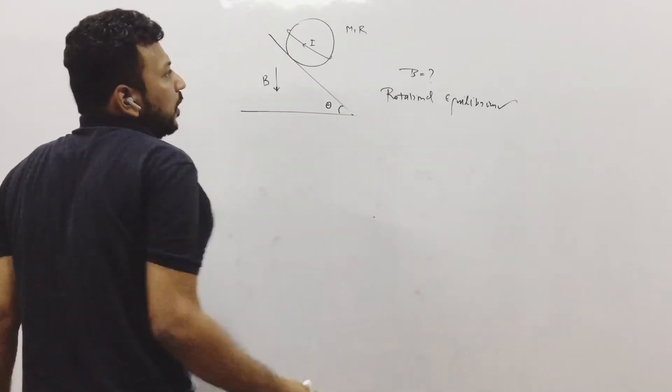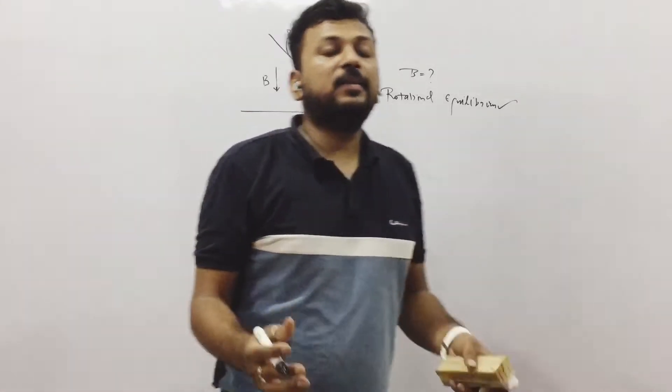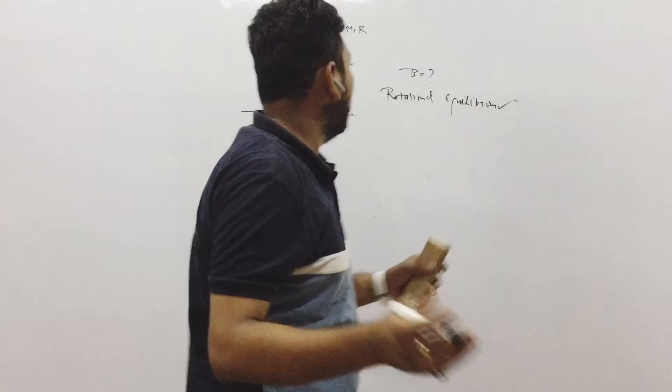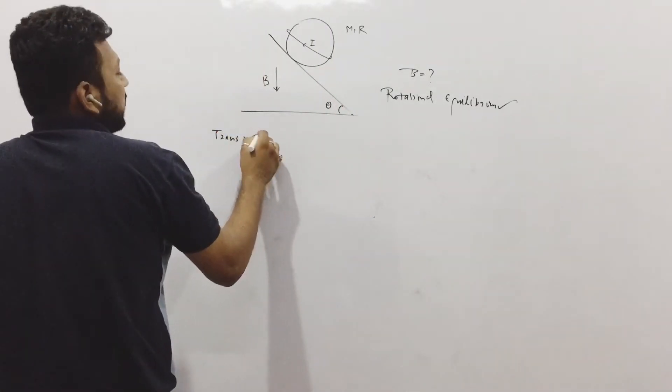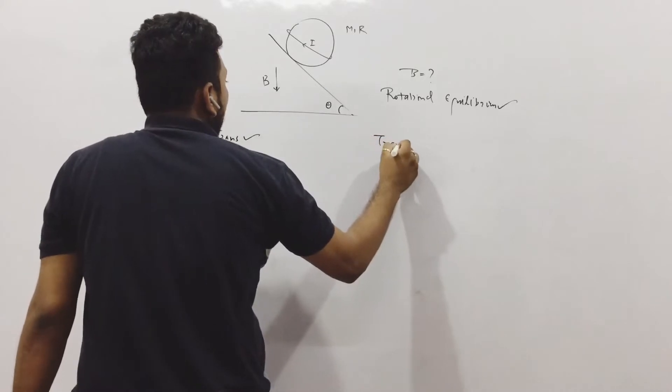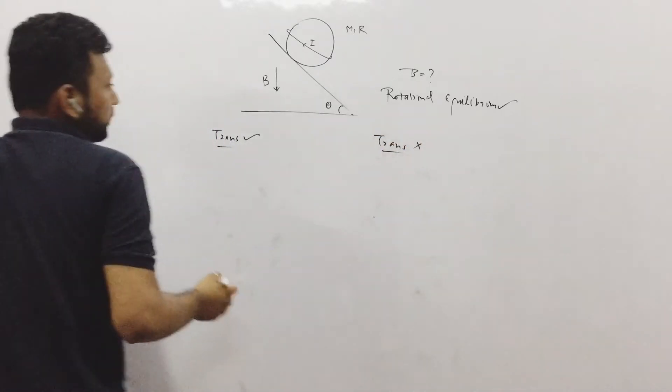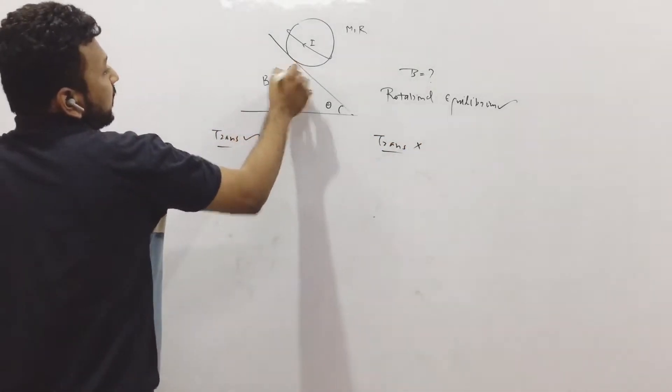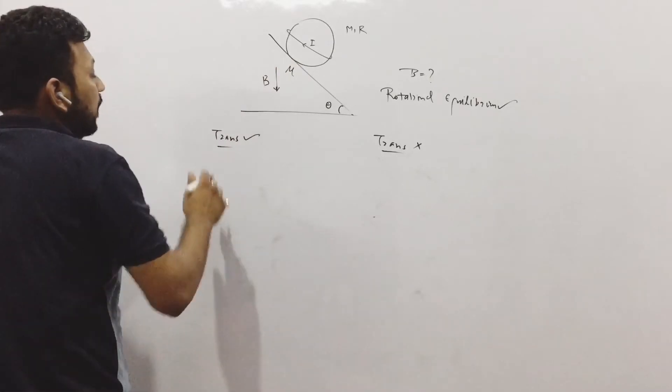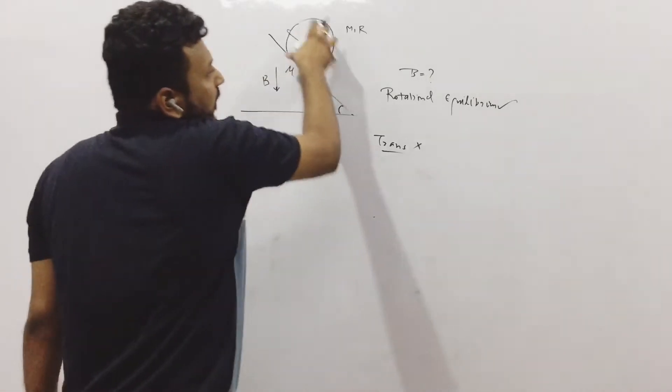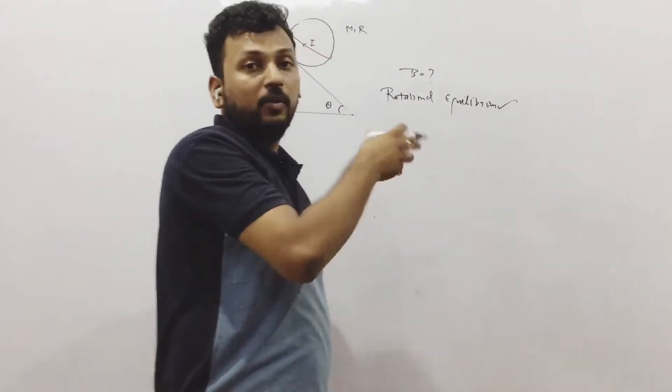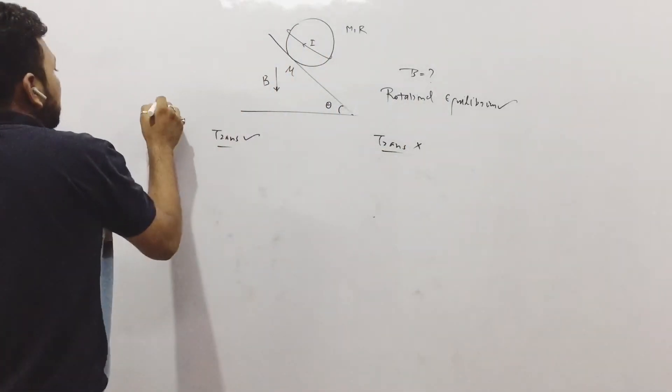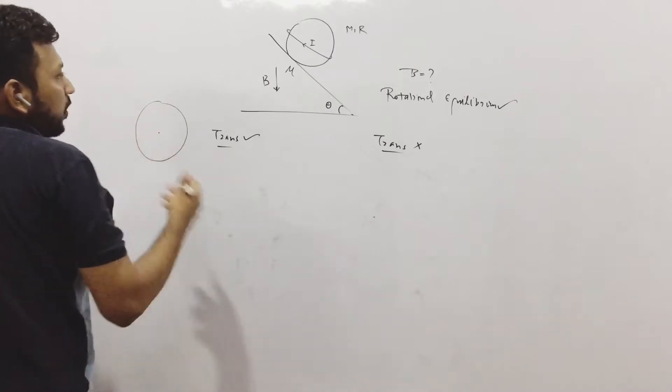So they have not mentioned whether it is in translational equilibrium or not. So let us take two cases, translational equilibrium is there and translational equilibrium is not there. Let us take some friction mu here. If it is in translational equilibrium that means it is not going down or going up and it was in rotational equilibrium that means it was not rotating. That means in this case, it is not moving at all.